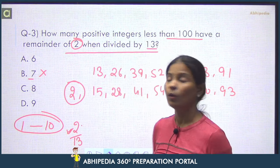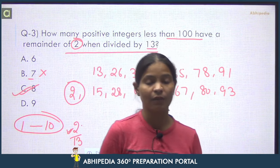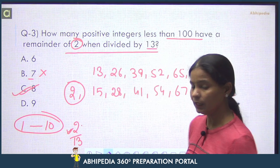But question says less than 100. You will also include number 2, because when you divide 2 by 13, if numerator is less than denominator, the remainder is the number itself. So answer is option C: 8 will be the answer.